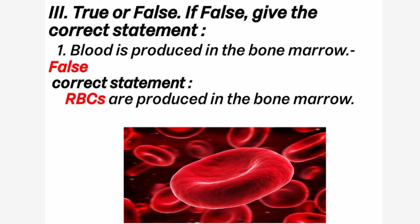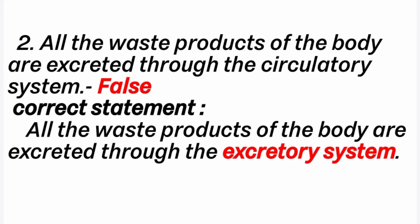Second question: all the waste products of the body are excreted through the circulatory system. The answer is false. Correct statement: all the waste products of the body are excreted through the excretory system, not the circulatory system. The circulatory system transports nutrition, oxygen and hormones, while the excretory system eliminates waste products.